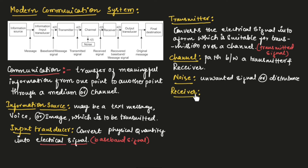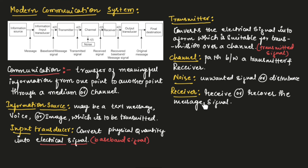Now let us see the receiver. The function of the receiver is to receive or recover the message signal that is transmitted by the transmitter. This message signal received by the receiver will be in electrical form.